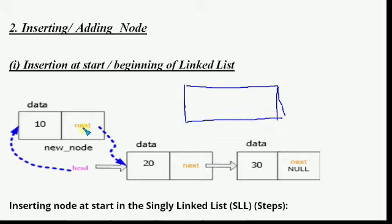Using the dynamic initialization method with a pointer, we write: node* nptr = new node. This means nptr will be our new node. When we write 'node* nptr = new node', a new node gets created.